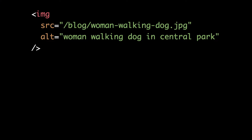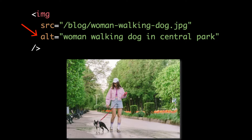To create the alt text for an image, we use the alt attribute on an image element in our HTML markup. Here we have an image tag with a source attribute which points to the file for the image, and we also have this alt attribute. In this example, the alt attribute has a value of 'woman walking dog in Central Park,' which is a pretty good description of what the image is all about.